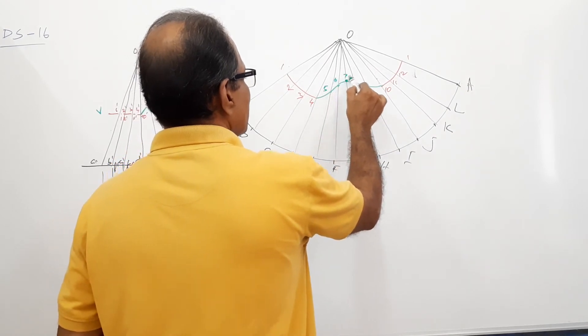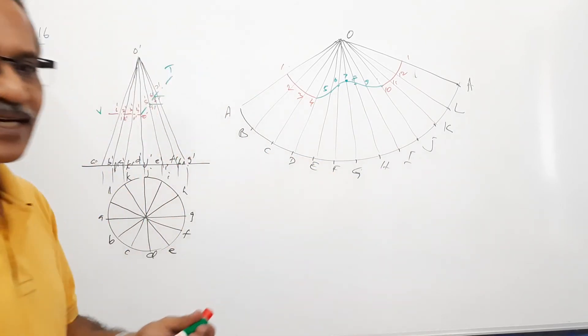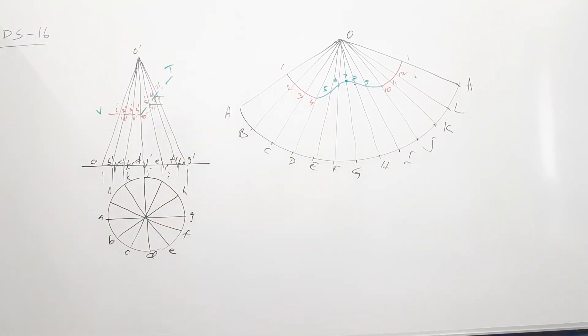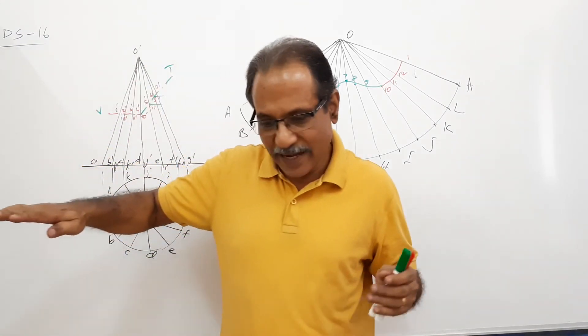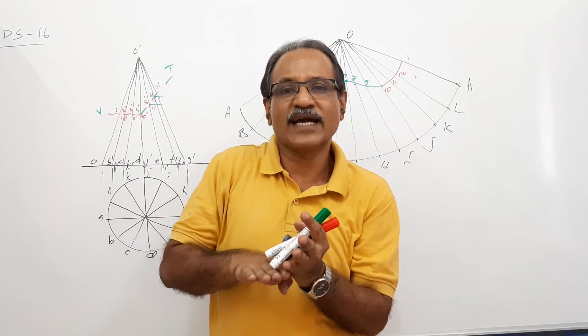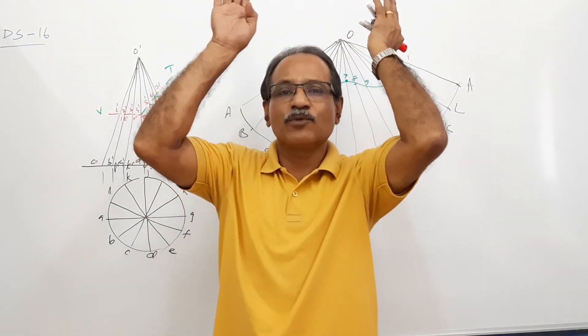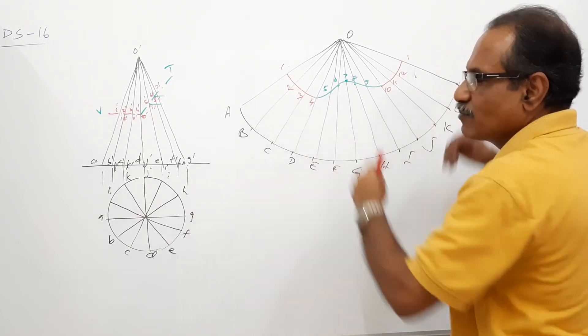What about the center portion? Draw horizontal lines through 5 dash, 9 dash, 6 dash, 8 dash and take them and mark on the respective general. 5, 6, 7, 8, 9. This is the curve in the development. This is one option. The horizontal cutting plane comes from there, the inclined cutting plane comes from here and they meet at the center of the axis. The top is removed. This is the development of the remaining part.